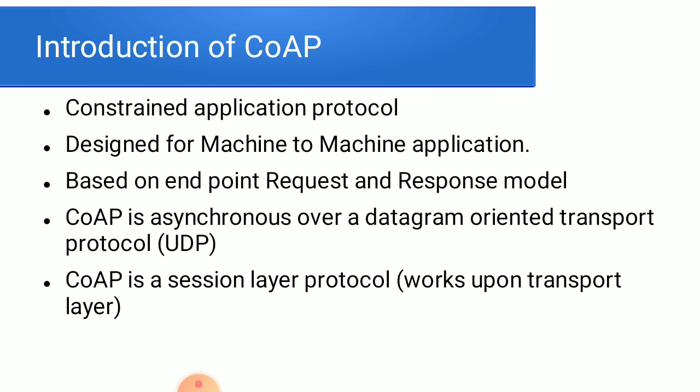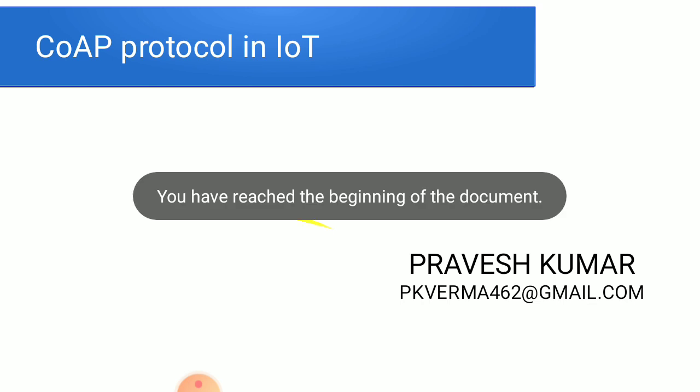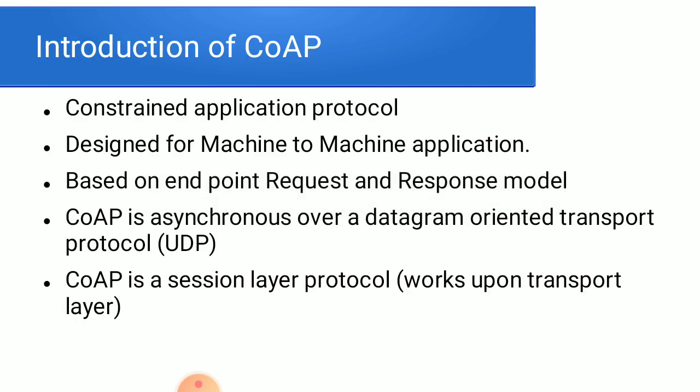CoAP is based on the machine-to-machine application. It has a request and response type of model. CoAP is a datagram protocol over the transport layer — specifically a UDP type of datagram protocol.